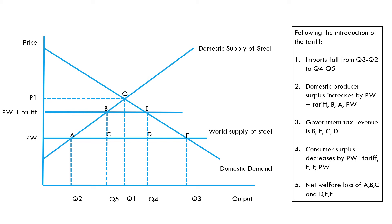This is a really excellent diagram because it shows us a lot. We can talk about the benefits of free trade and the increase in consumer surplus, and the way in which only the most efficient domestic suppliers can survive in a market flooded by cheap imports. When we introduce a tariff, we see the fall in imports from (Q3 minus Q2) to (Q4 minus Q5); an increase in domestic producer surplus by the area Pw-plus-tariff, B, A, Pw; government tax revenue of area B, E, D, C; and a decrease in consumer surplus by the larger area Pw-plus-tariff, E, F, Pw — giving rise to two areas of net welfare loss: area A, B, C and area D, E, F.